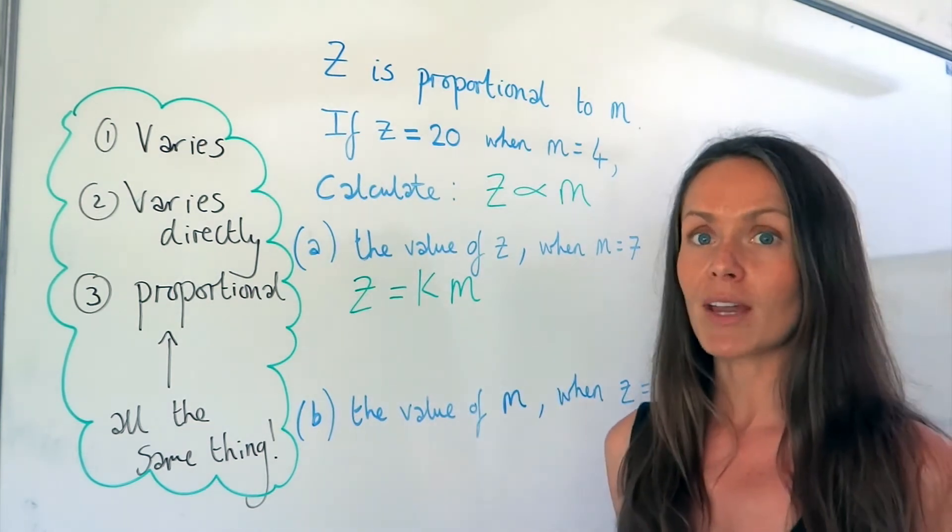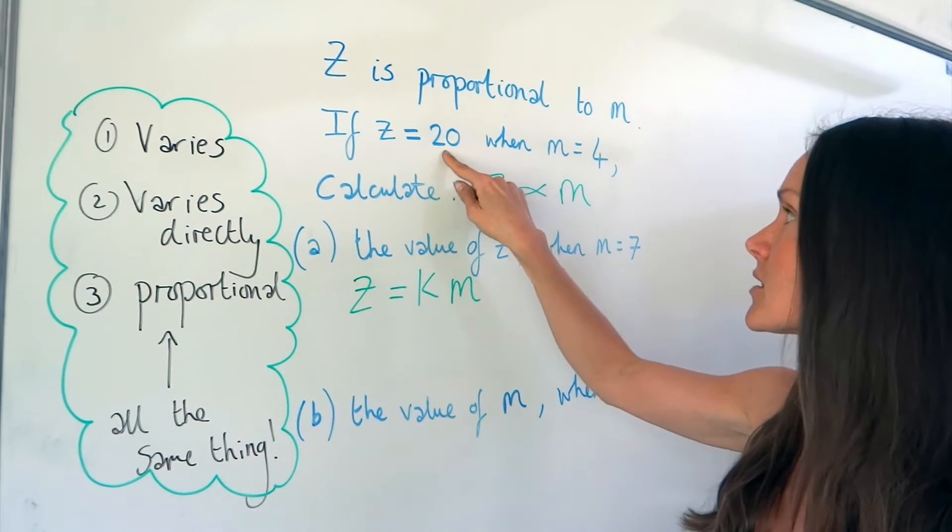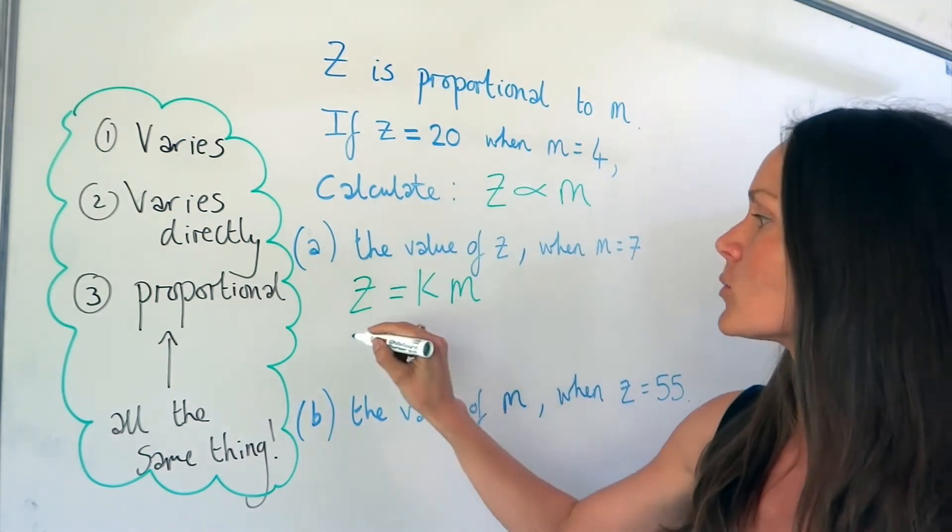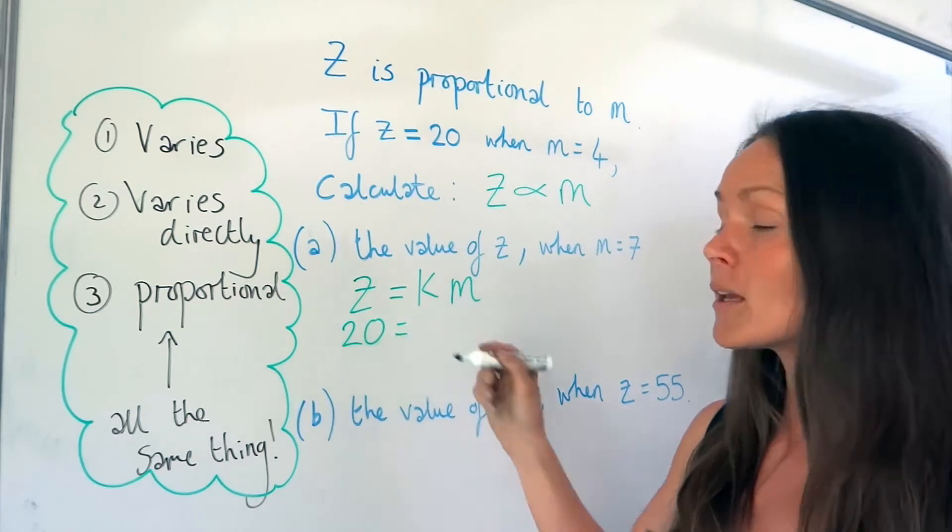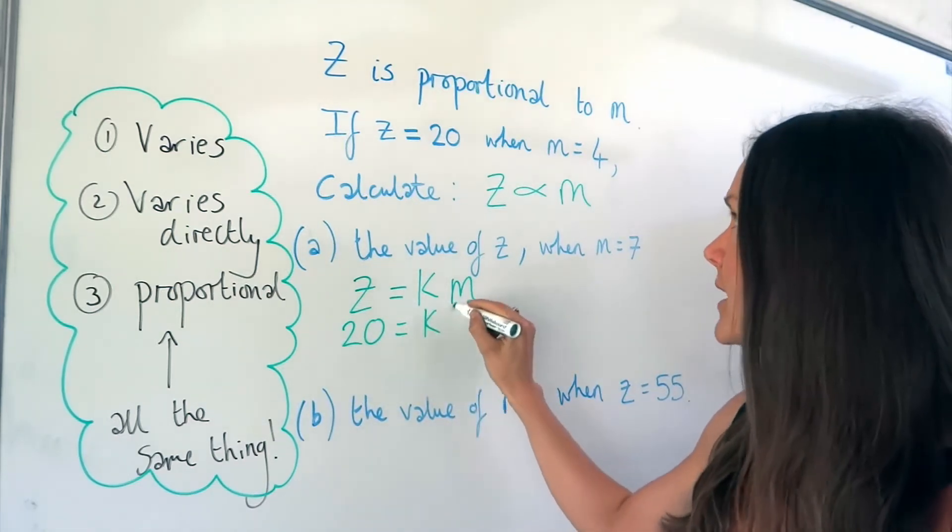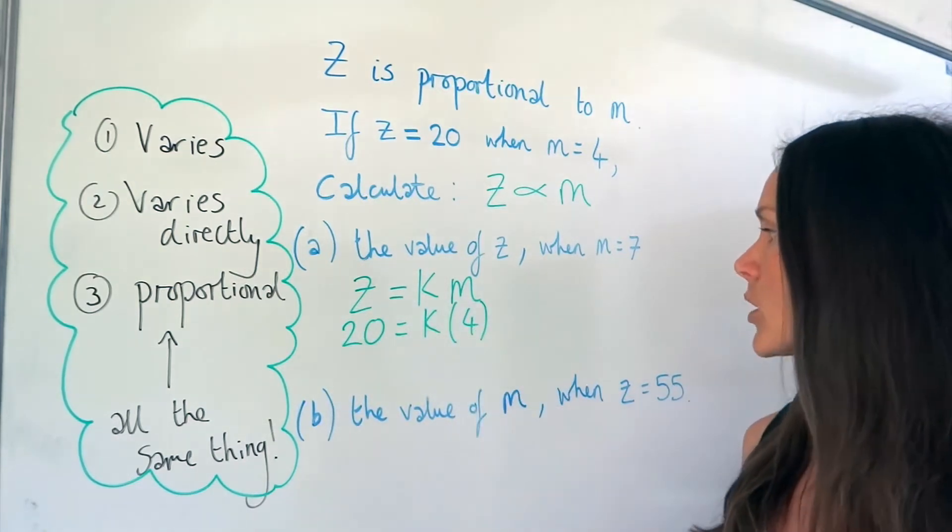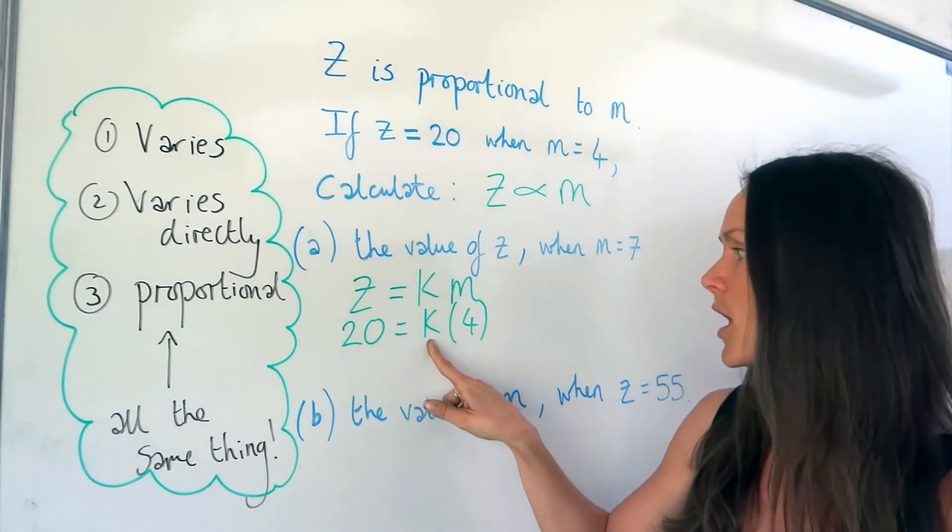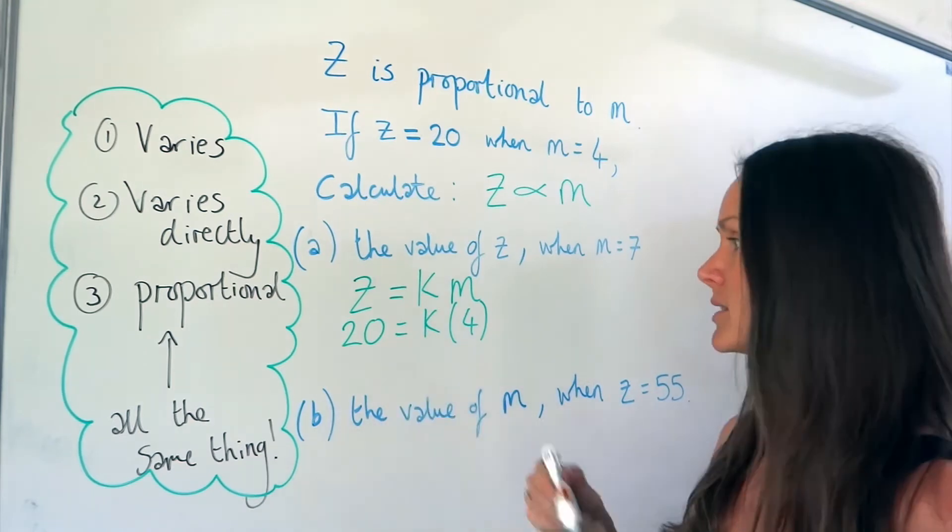So we need to work out what the value of k is. And in order to do that, I need to substitute in the values 20 and 4. So I'm going to change z to 20, k we don't know yet, and m is 4. So looking at this equation, I can see k must be 5, because 5 multiplied by 4 gives me 20.